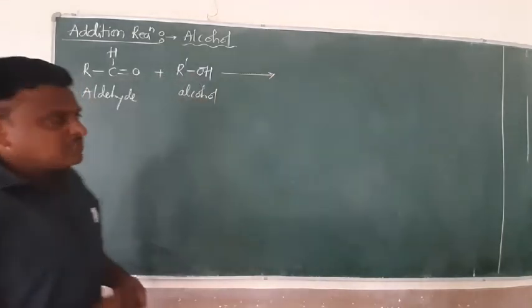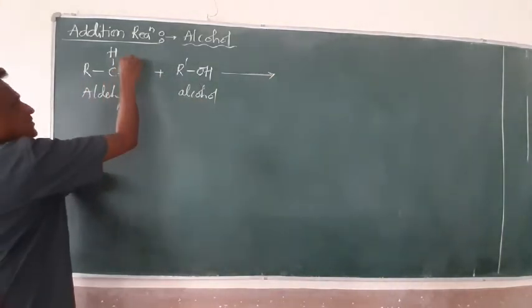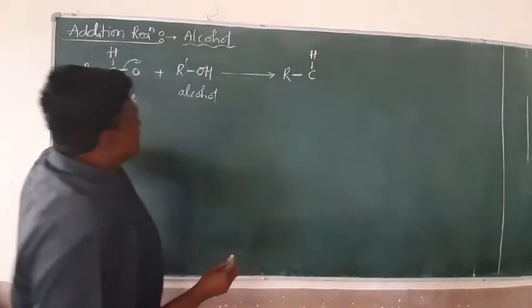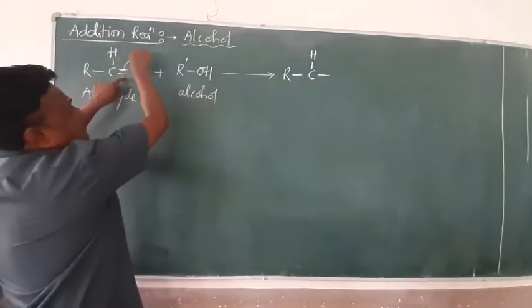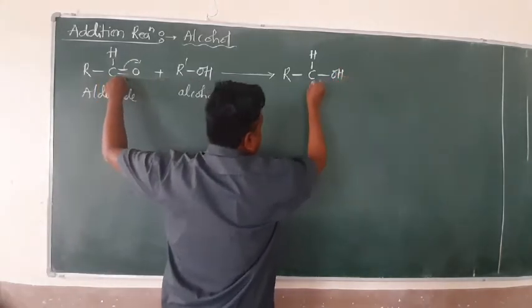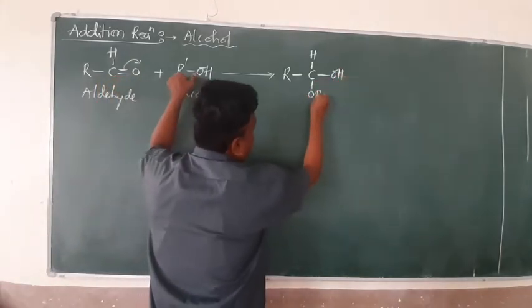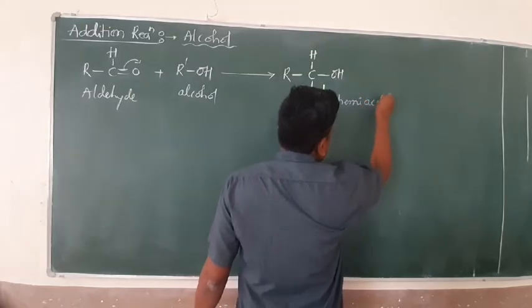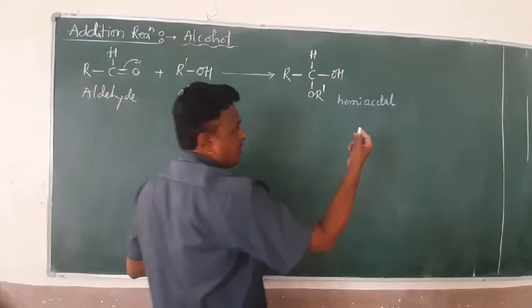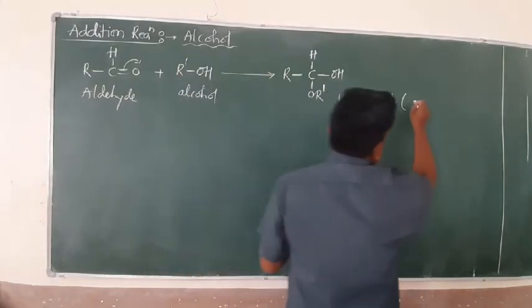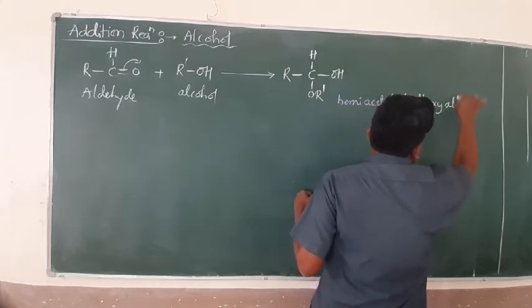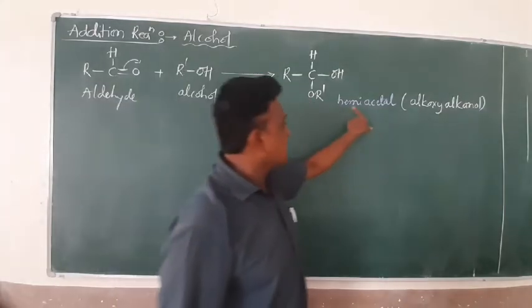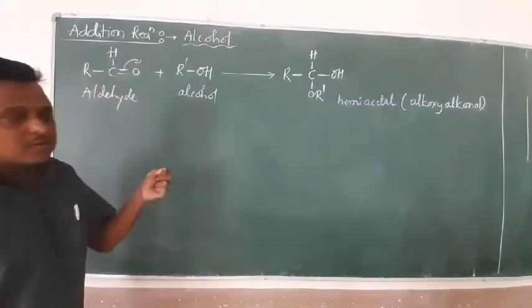Aldehyde and alcohol undergo addition reaction. The simple story is the cleavage of this pi bond. Now the reaction is R - this is H as it is. The pi bond will be cleaved. The formation of the product is OH and now the remaining OR'. This component is known as hemiacetal. Rather, you have to know the answer is alkoxyalcohol. I repeat, alkoxyalcohol will be formed. This is a hemiacetal. This hemiacetal means half of the portion undergoes addition.